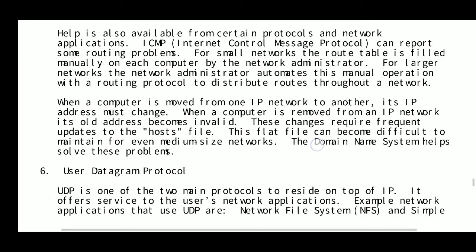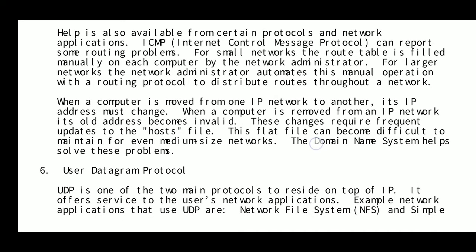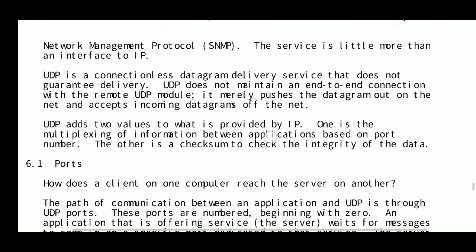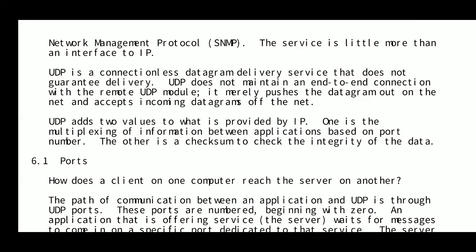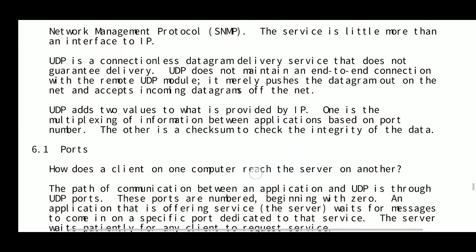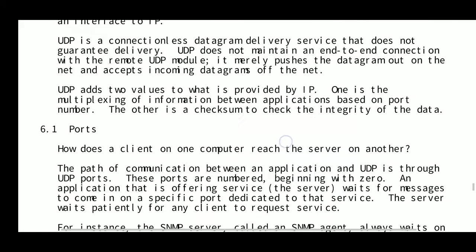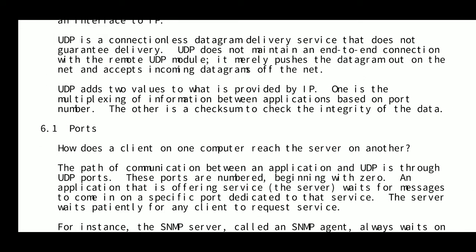UDP is one of the two main protocols that resides on top of the Internet Protocol IP. It offers services to network applications. Examples of network applications that use UDP are Network File System and Simple Network Management Protocol. The service is little more than an interface to IP. UDP is a connectionless datagram delivery service, whereas TCP is a connection-oriented service.